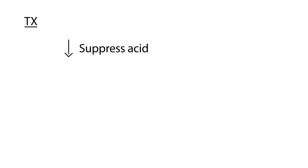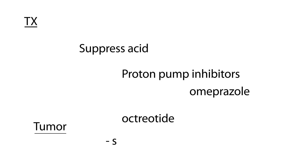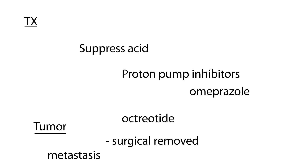In terms of treatment, the first thing you want to do is suppress the acid, because there is so much of it. That is done with a proton pump inhibitor, and one of the most commonly used is omeprazole. Another medication to decrease gastric acid is octreotide. When it comes to the tumor itself, it really needs to be surgically removed. If metastasis has occurred, the patient will have to be treated with chemotherapy.